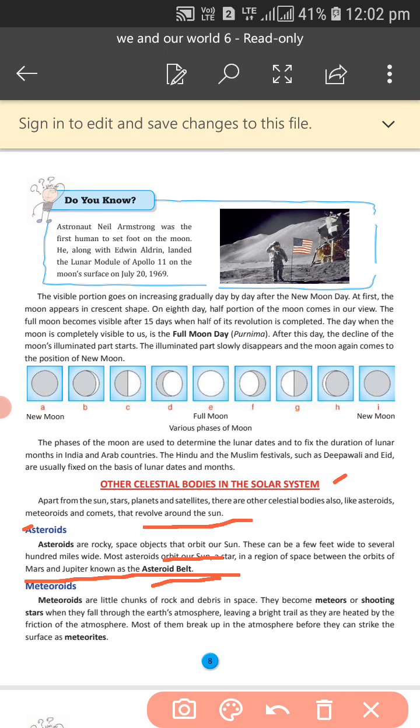Meteoroids are pieces of rock and debris in space. They become meteors or shooting stars when they fall through the Earth's atmosphere, as they are heated by the friction of the atmosphere. Most of them break up in the atmosphere before they can strike the surface.